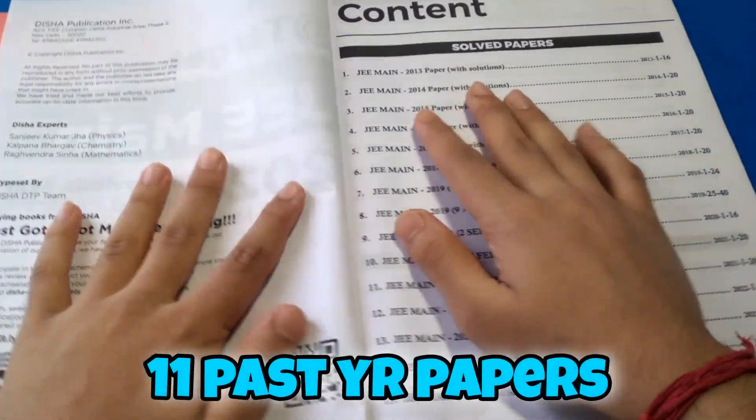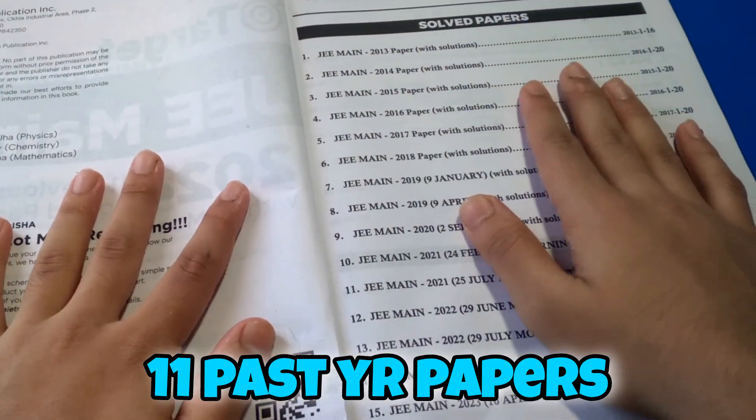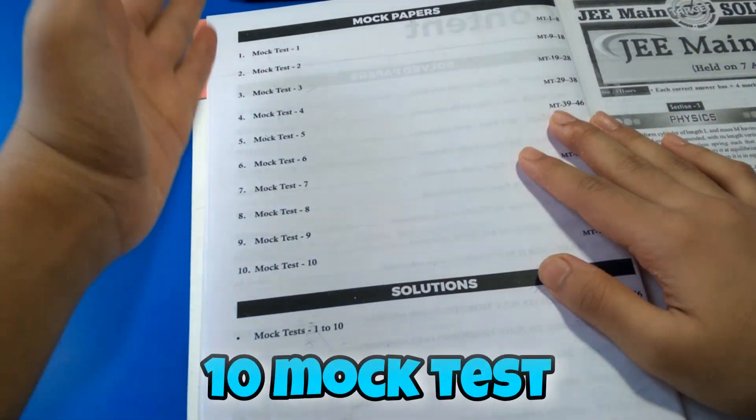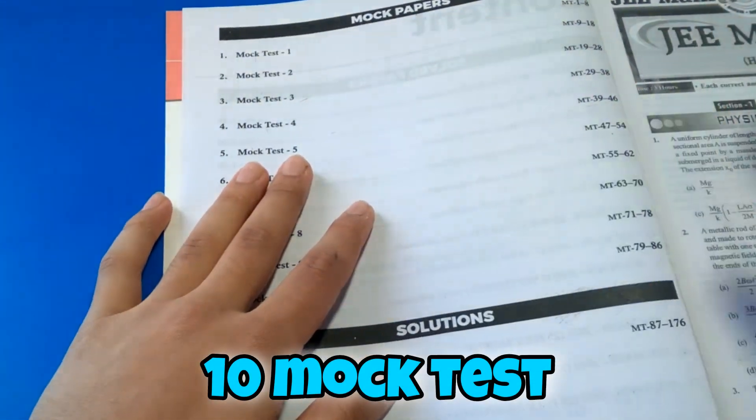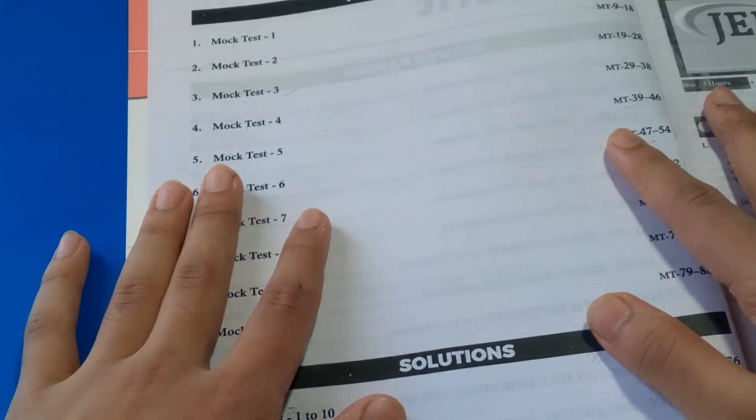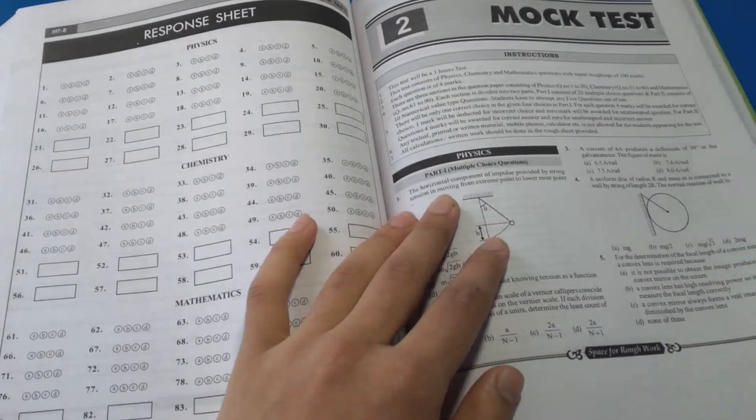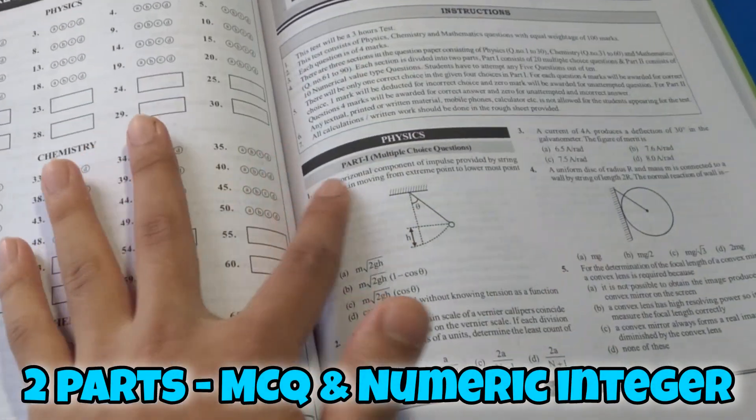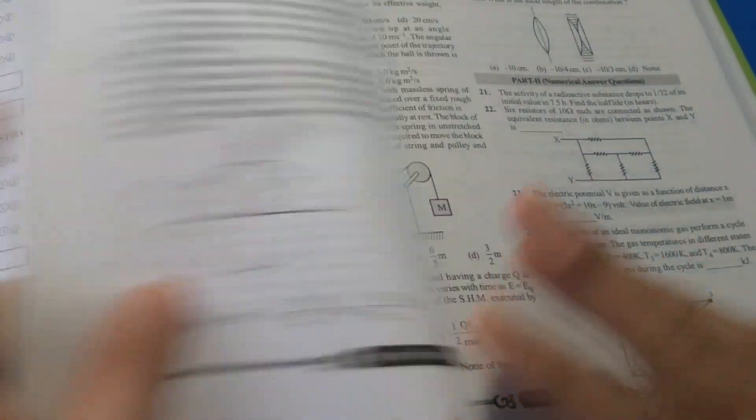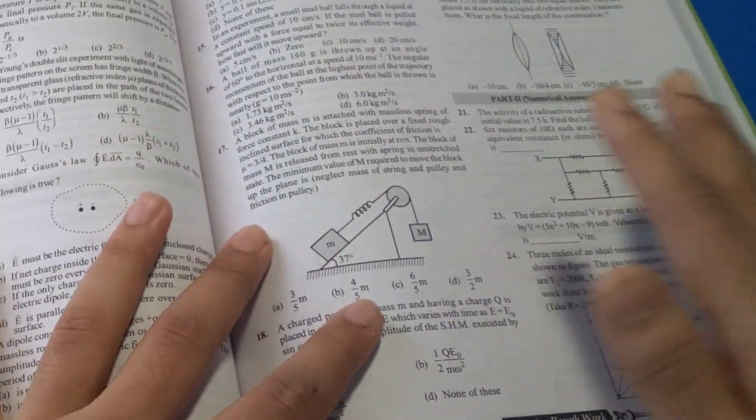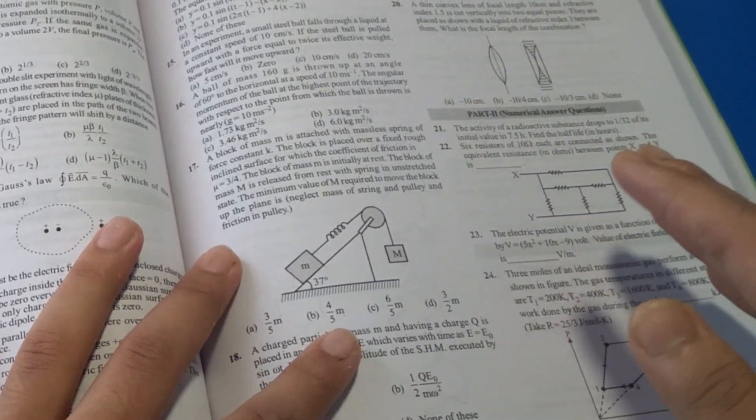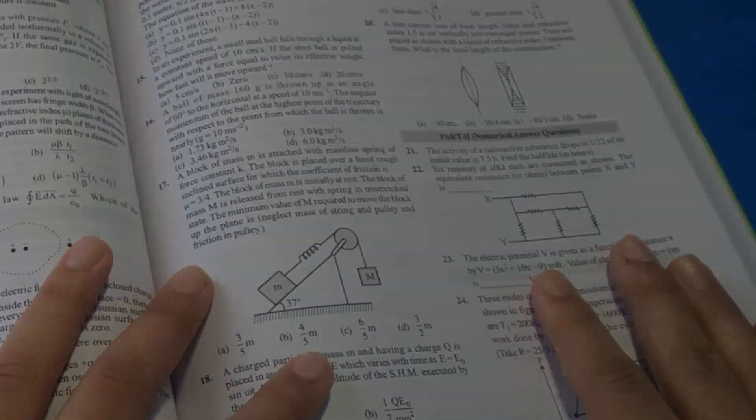This book contains 11 past year papers with detailed solutions from 2013 to 23. Along with this, 10 additional mock tests on the latest 90 question pattern with optional numeric answer questions have been given in the book. Each section of the mock test has two parts. Part 1 has 20 compulsory MCQs and part 2 has 10 numeric answer questions out of which only 5 are to be attempted, which is similar to the pattern in JEE Mains.